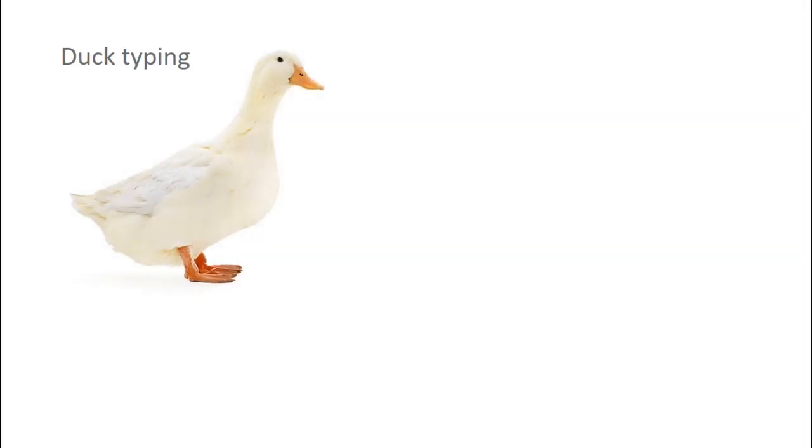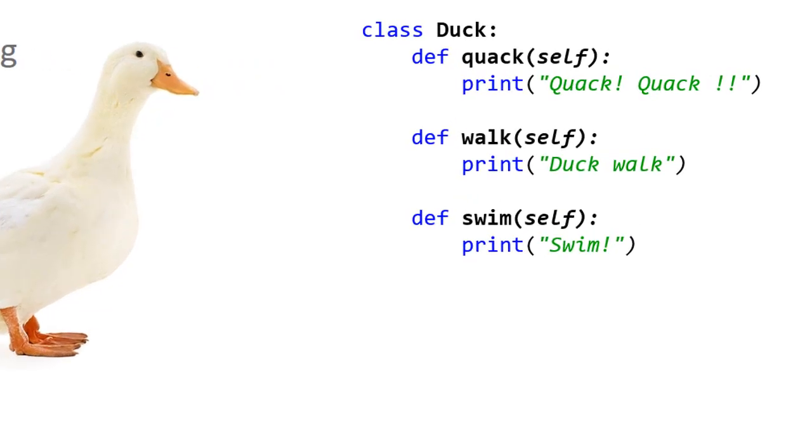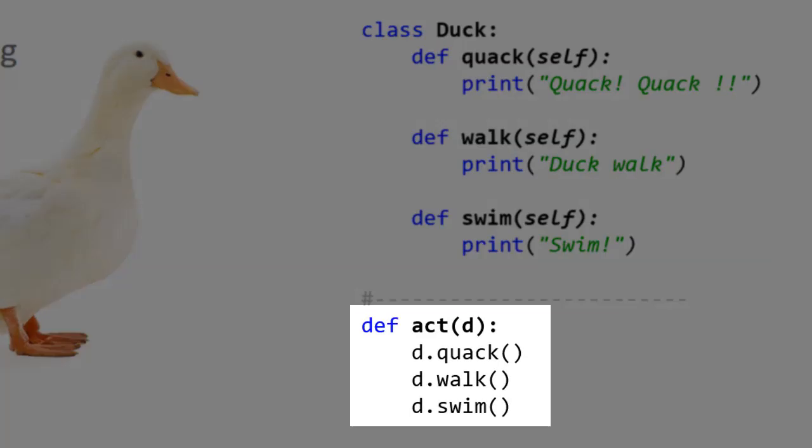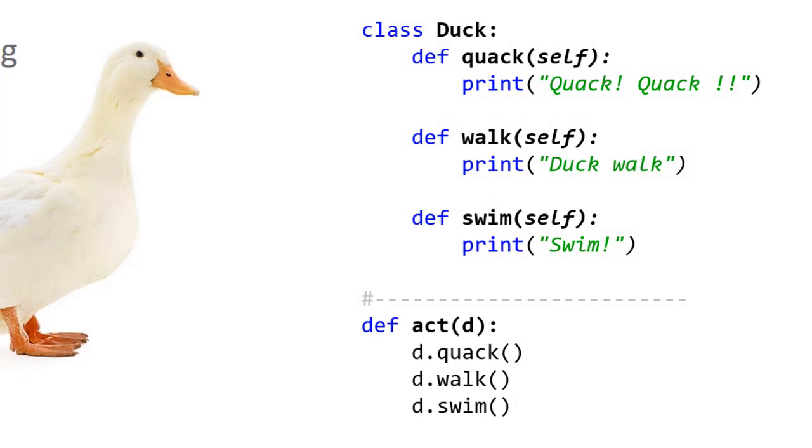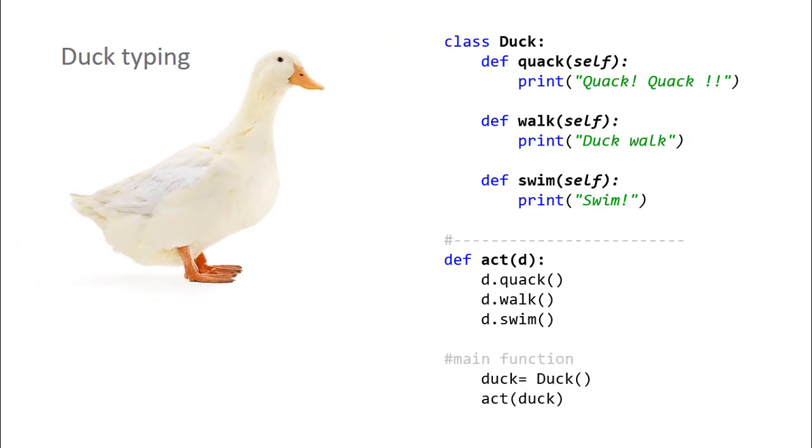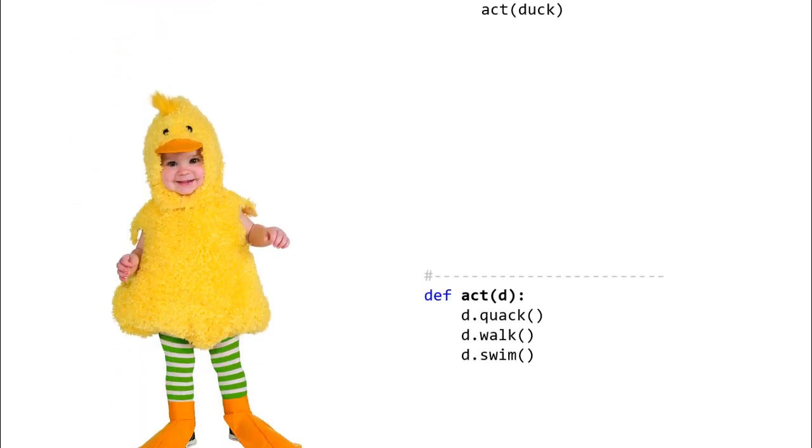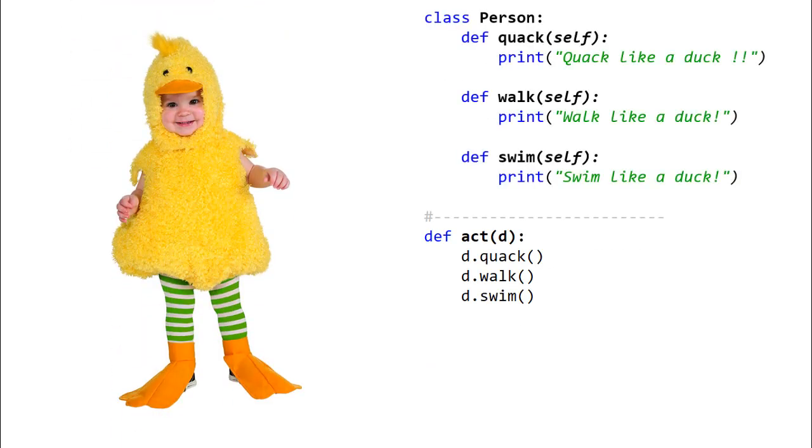Now, coming back to python, the polymorphism can also be observed through something called as duck typing. Let us understand this interesting concept. Suppose there is a class called duck, which has three behaviors, namely quack, walk, and swim. A function act calls all three methods on the pass argument object. Now, let us create object of duck and pass it to act function. This will execute and all three methods will be called. Now, assume that there is a person participating in a fancy dress contest. The behavior depicted by this person is quack, walk, and swim like a duck.